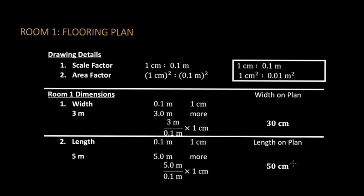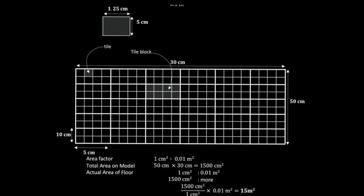The length is 50 centimeters. A quick note: the length should be the longer side if you have a rectangular shape. So the length would be the 50 centimeters. Here is how you demonstrate it — you measure 30 centimeters going across and 50 centimeters going down. This is the length and this is the width.